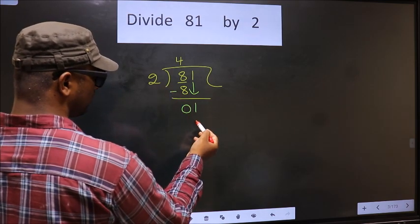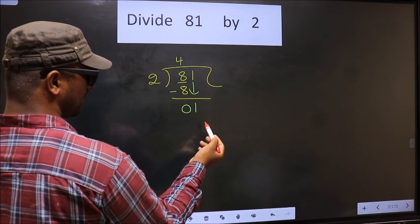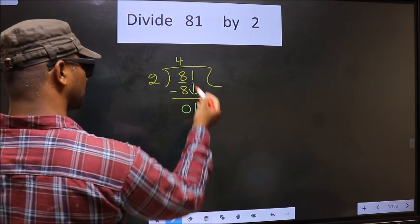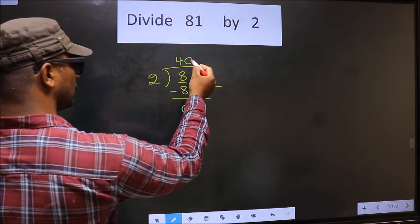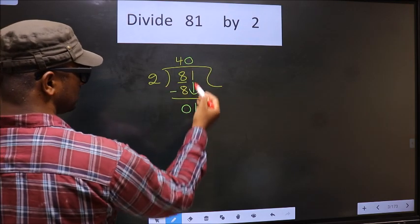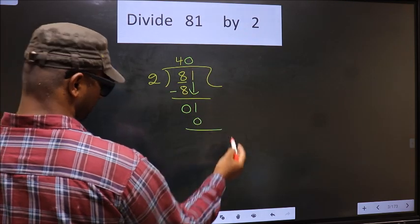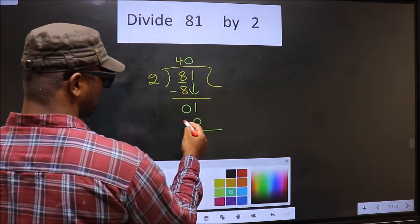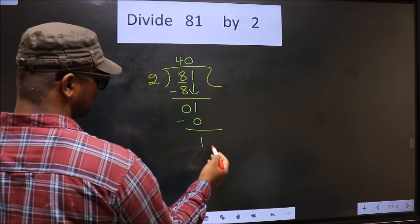Instead, what you should think of is what number shall we write here. If we write 2, that will be larger than 1. So what we do is we take 0 here. So 2 into 0, 0. Now you subtract. 1-0, 1.